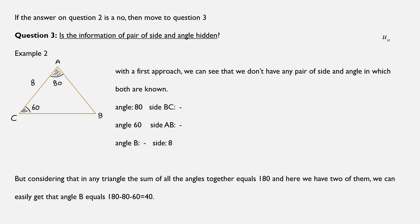We have the angle of 80 degrees, but we don't have its opposite side. We have the angle of 60 degrees, but we don't also have its opposite side. We have the side that measures 8, but we don't have the measurement of its opposite angle. So up to here, we would say no, we don't have a pair of side and angle to be known.